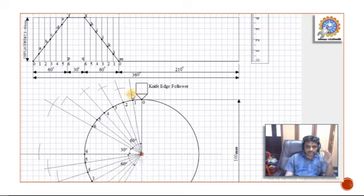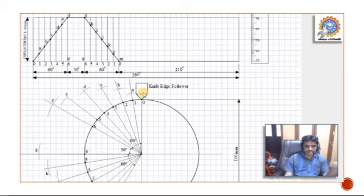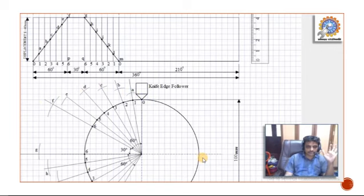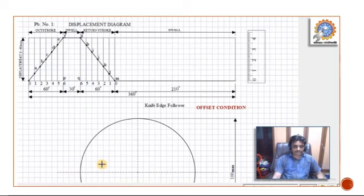Referring to the displacement diagram, all respective points are marked: 0, then 1-A, 2-B, 3-C, 4-D, 5-E, 6-F, and in the return stroke G through M are similarly marked. All relevant points A, B, C, D, E, F, G, H, I, J, K, L, M are marked. Now, joining all these points freehand through 0, A, B, C, D up to M completes the cam profile diagram. Construction of the cam profile for the knife edge follower with inline follower condition is complete.